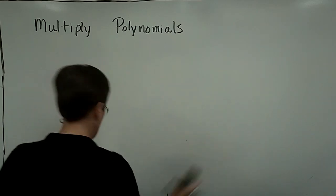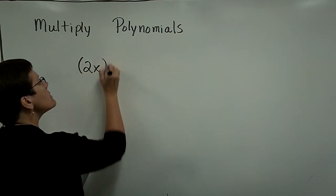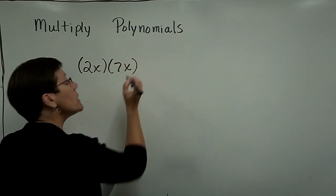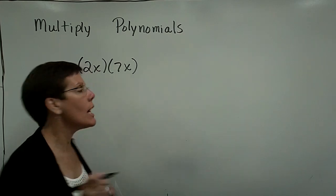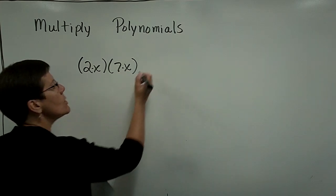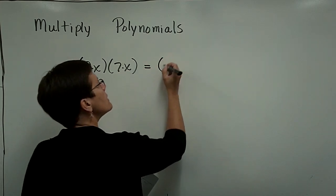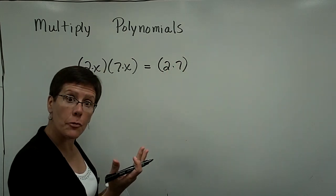If I wanted to take two monomials and multiply them together, because the commutative property of multiplication says you can multiply in any order that you'd like, this reads 2 times x and 7 times x. What you would think here is that the 2 times the 7 can be multiplied together, and that gives you 14.